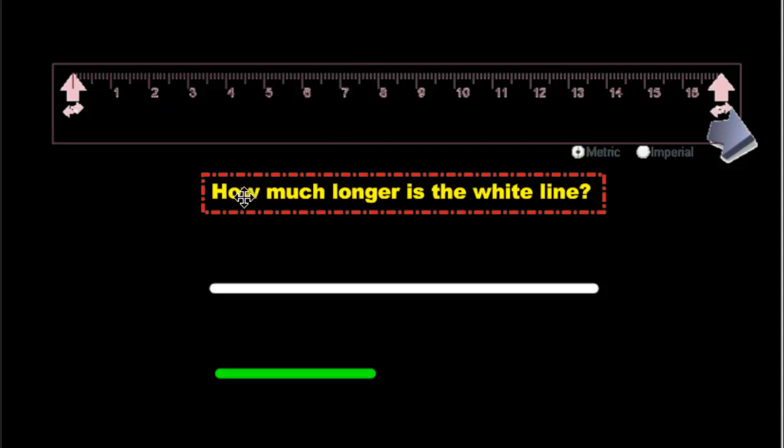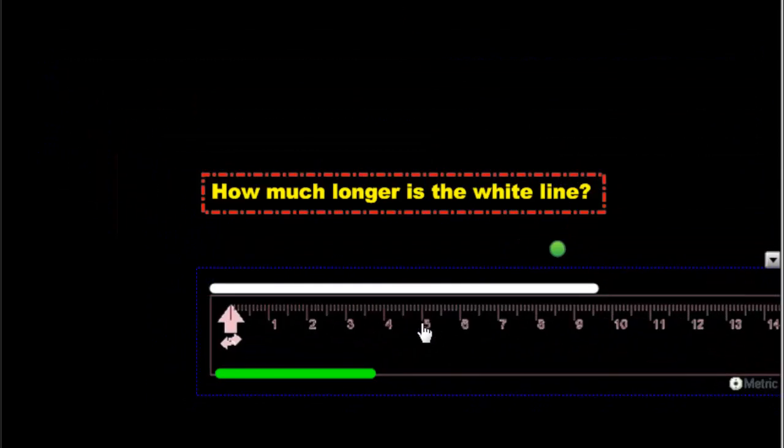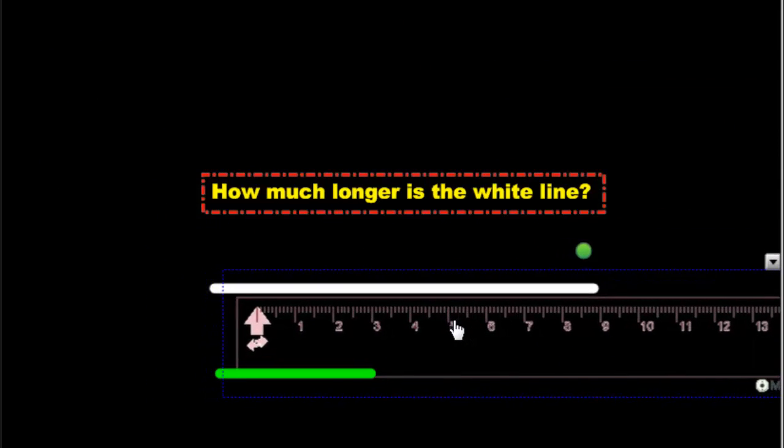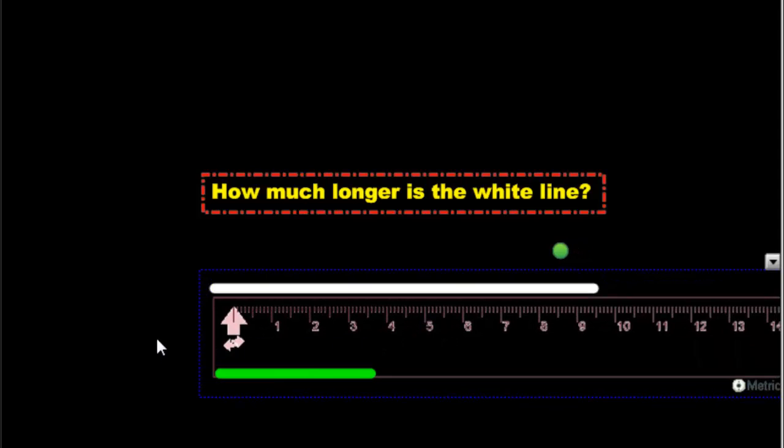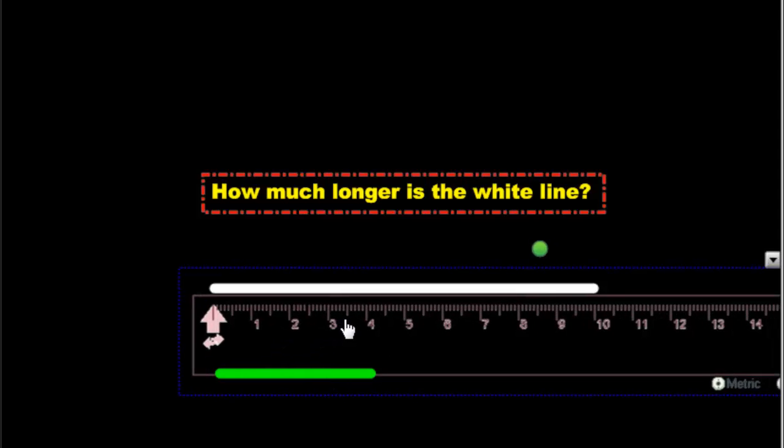So the question asks us how much longer is the white line? So we need to measure both of them to figure that out. I'm going to show you how to do that. Now when a lot of people first start using rulers, they actually line it up the wrong way. Look what they do. They take the ruler, they put it right there. Now look closely. You see the edge of the ruler lines up with the edge of the line. They think, oh yeah, I got it. I got this right now. I'm just going to go across and measure it. If you do that, you're going to get the wrong answer.